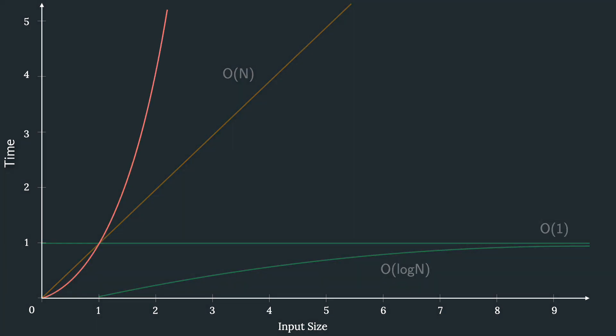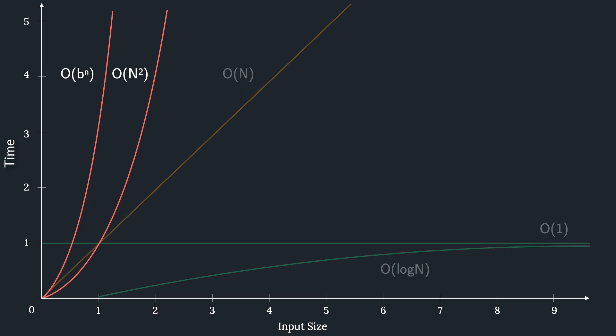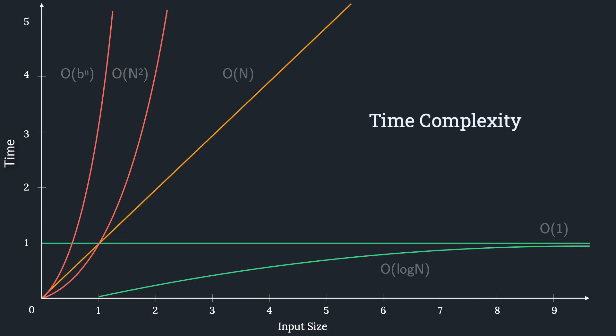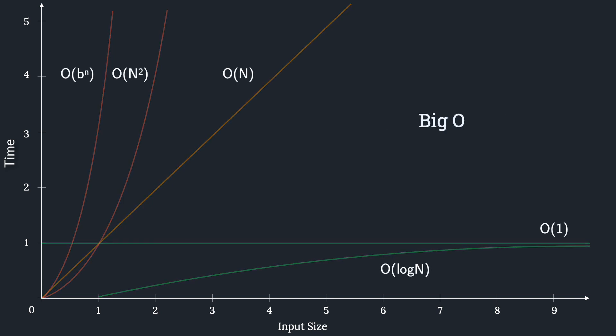Now, in the unfortunate scenario, you measure the algorithm's running time to be quadratic or exponential with respect to the input. Then it's probably very inefficient because with very little change in input, the algorithm takes a very long time to run. The actual measuring of how the running time of an algorithm changes with respect to the input size is called the time complexity.